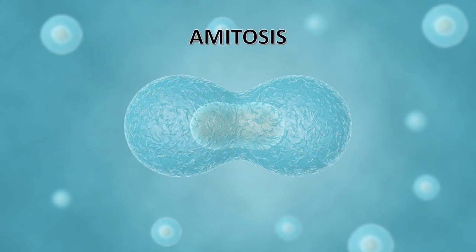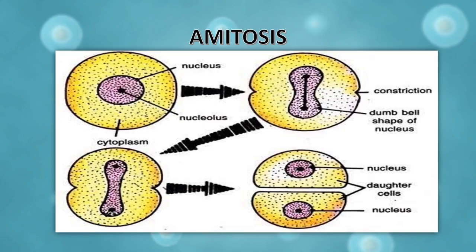Let's understand amitosis with the help of an example. In this diagram you can see a cell with a nucleus inside it. That nucleus is going to elongate and take a dumbbell shape, and there is also constriction of the cytoplasm. This constriction of cytoplasm and elongation of nucleus will further proceed and at the end divide the cell into two daughter cells, each with an individual nucleus.